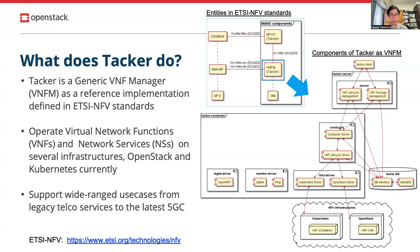The bottom right of the slide is an overview of the implementation of TAKA. It consists of two processes: TAKA server and TAKA conductor. TAKA server behaves as an endpoint for API requests for calling backend services, and TAKA conductor is the core of the services. You can request TAKA to deploy virtual machines or containers as VNFs on OpenStack and Kubernetes via its ETSI NFV standards APIs.